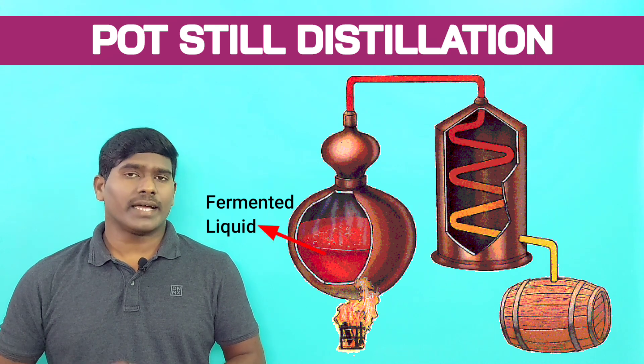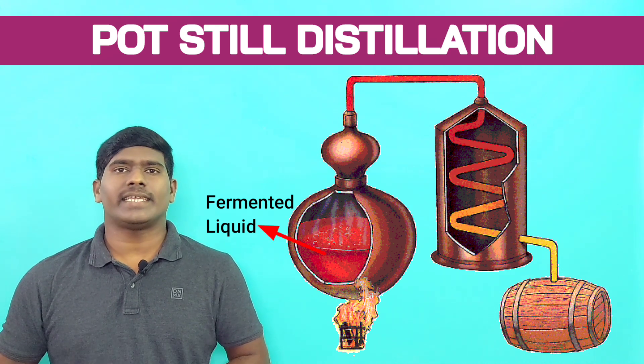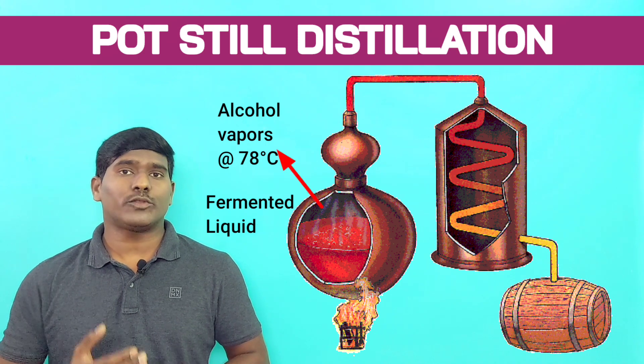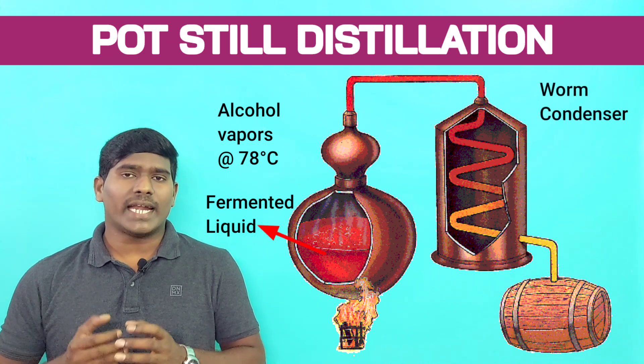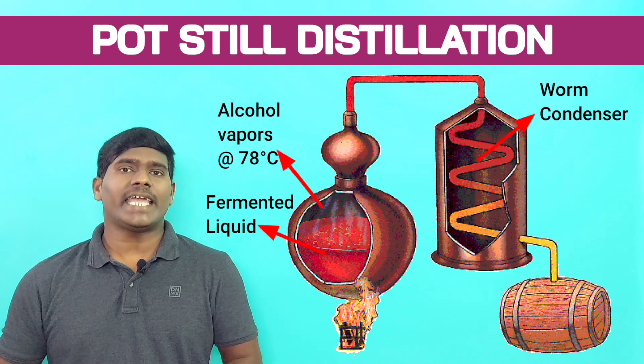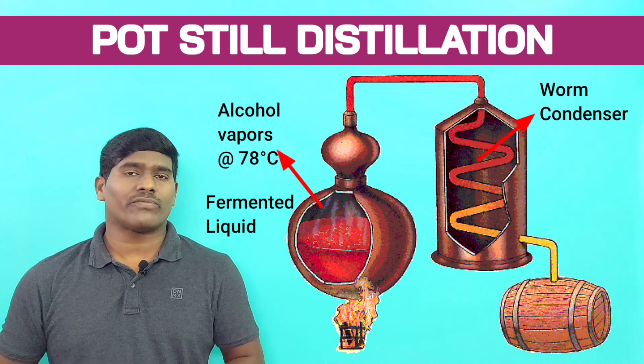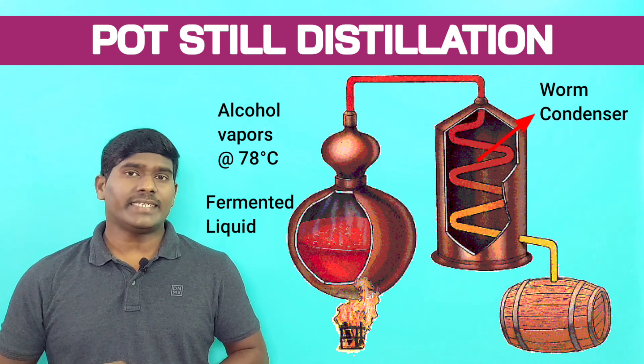When the temperature raises to 78 degrees Centigrade, the alcohol vapors rise and lead through a worm condenser where the vapors are cooled and condensed to a liquid containing an alcoholic percentage of 30%. It is redistilled.